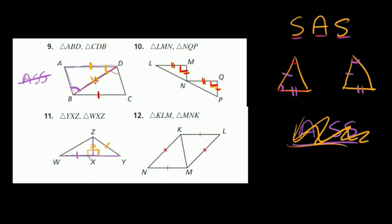On this triangle we can see side angle side. But on the other triangle, we have a side, a side, and an angle — so that's angle side side, which doesn't work. This triangle is side angle side, but the triangle on the right is unfortunately ASS. So these triangles are not congruent.